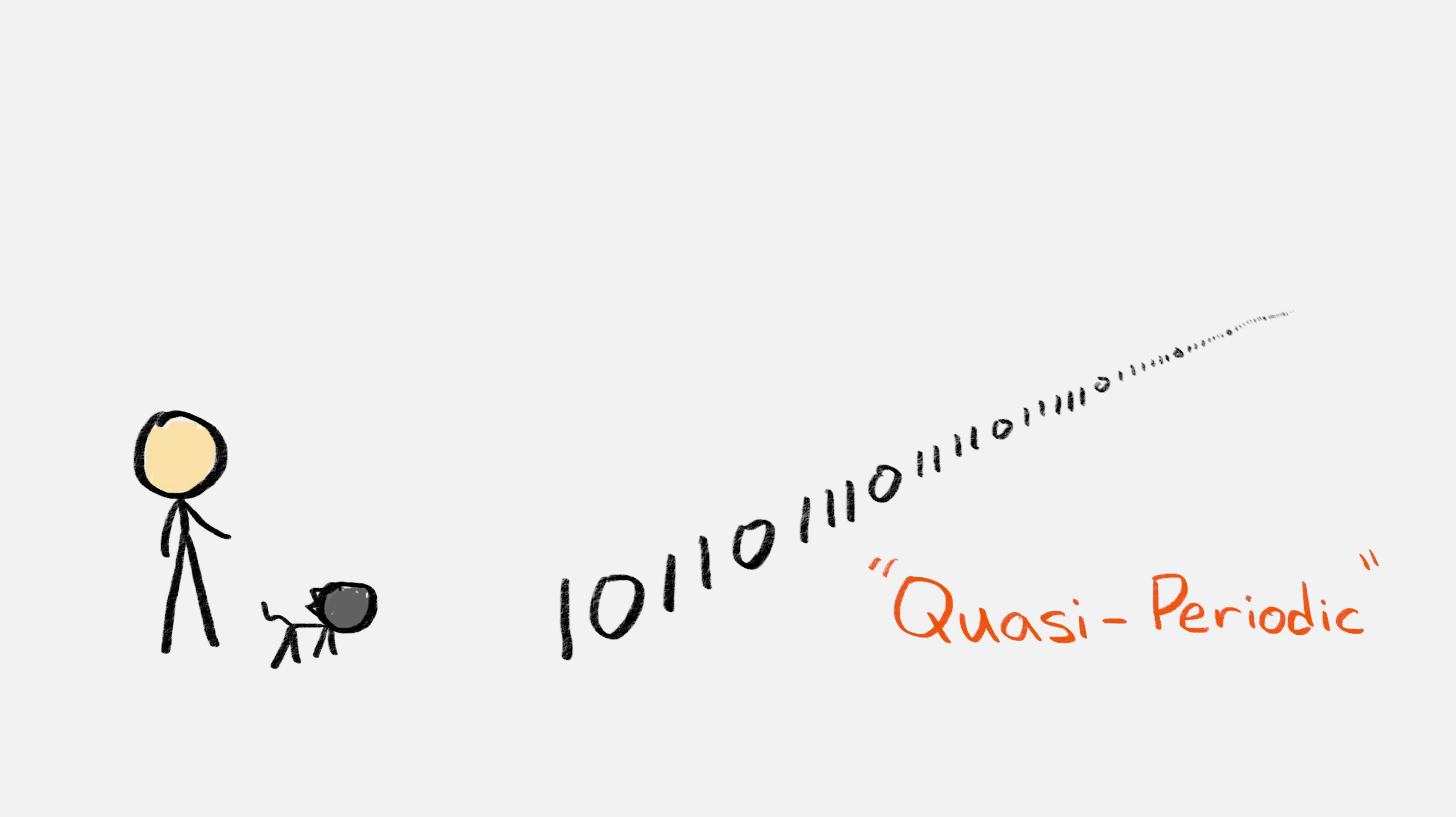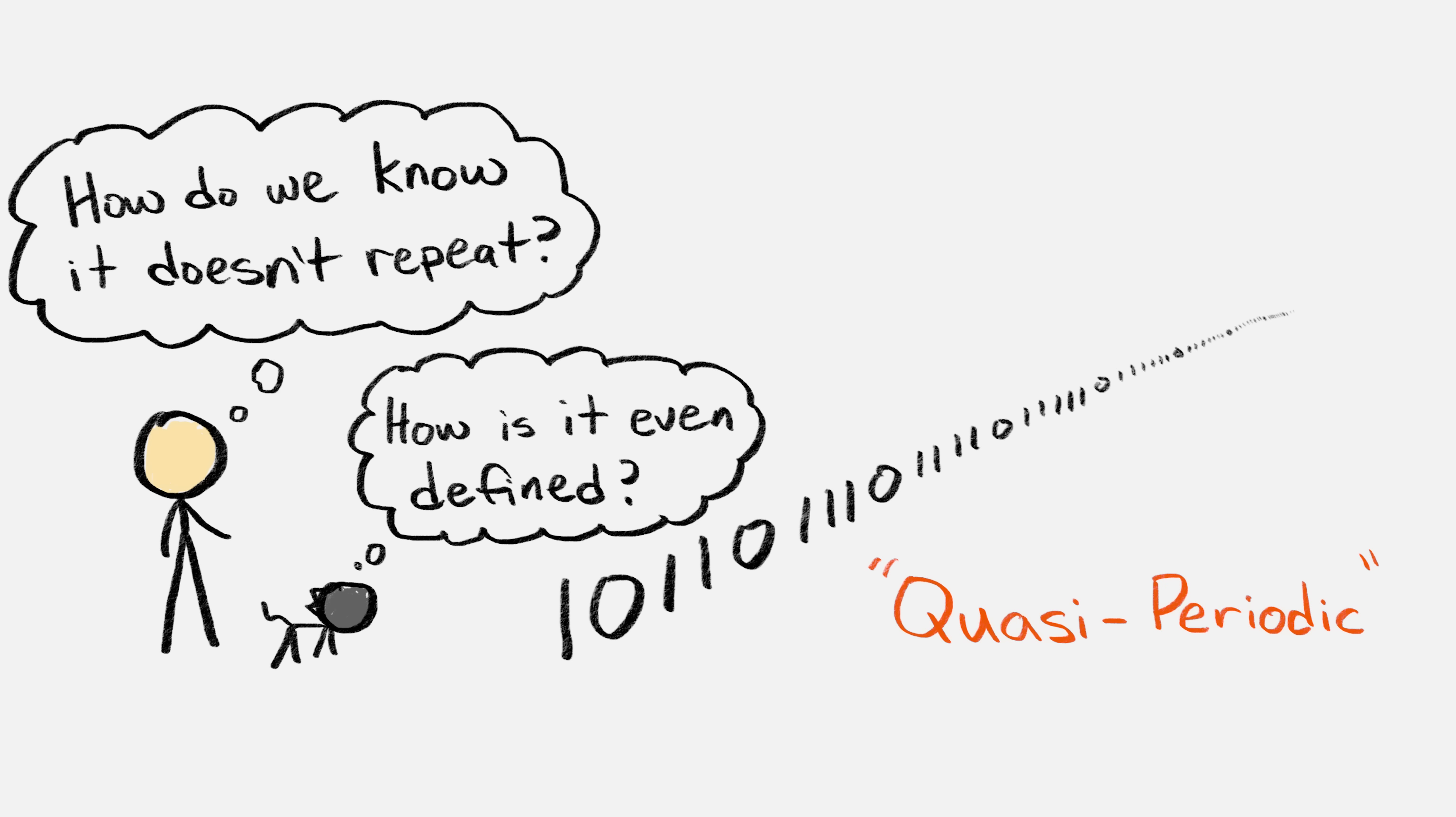But I never really felt like I understood these patterns. Like, how do you make them? How do we know they don't ever repeat? I just had to take somebody's word for it that they worked the way people say they do. Until recently, when I learned there's a hidden pattern inside Penrose tilings. A pentagrid. And it's quite possibly the best way to understand Penrose tilings. At least, it's what finally helped me feel like I understood them.